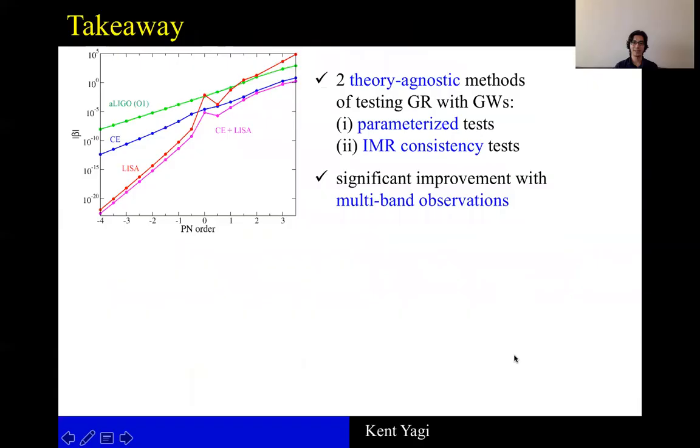Alright, let me conclude. I explained two theory-agnostic methods of testing GR using gravitational waves, parameterized test and inspiral-merger-ringdown consistency test. And in both cases, we find significant improvement in terms of testing GR if we can realize multi-band observations.